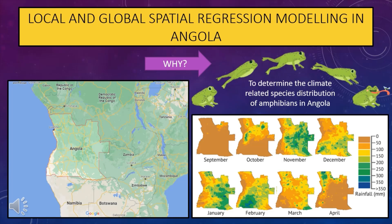As a group of macroecologists working for the International Union for Conservation of Nature, we have been tasked with performing some climate-related species distribution modeling on amphibians in Angola. We went about this using global and local spatial regression modeling and compared which of the models was better at estimating the relationship between environmental variables and amphibian species richness. We also compared our findings with those of a study performed in Tropical Colombia.